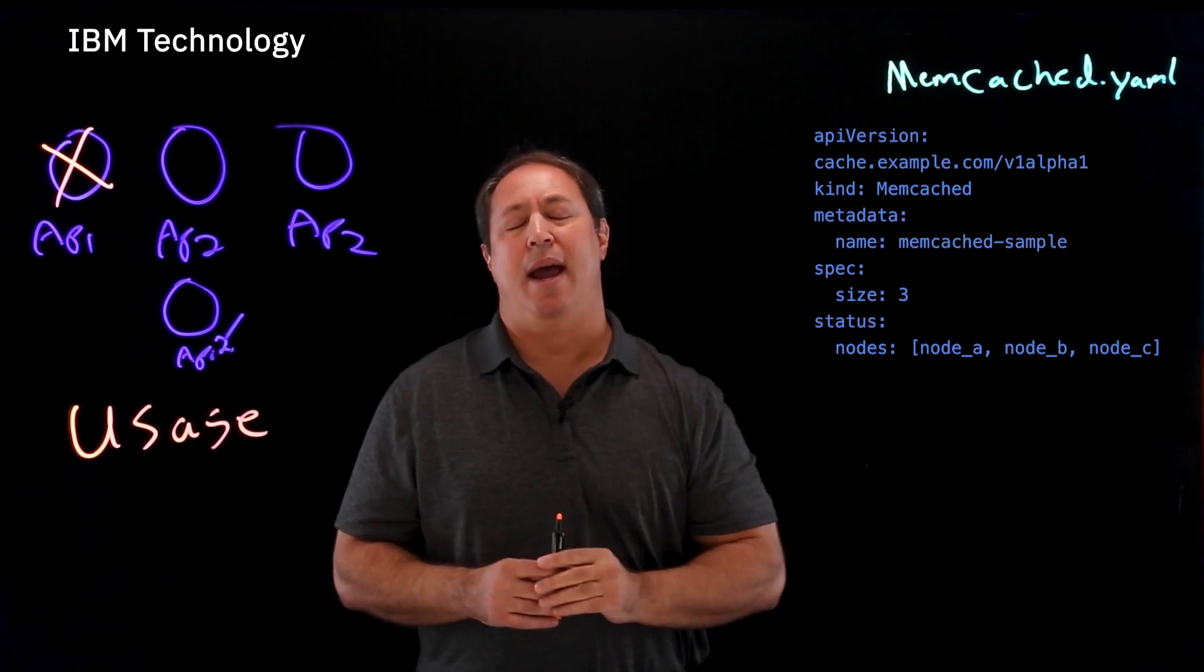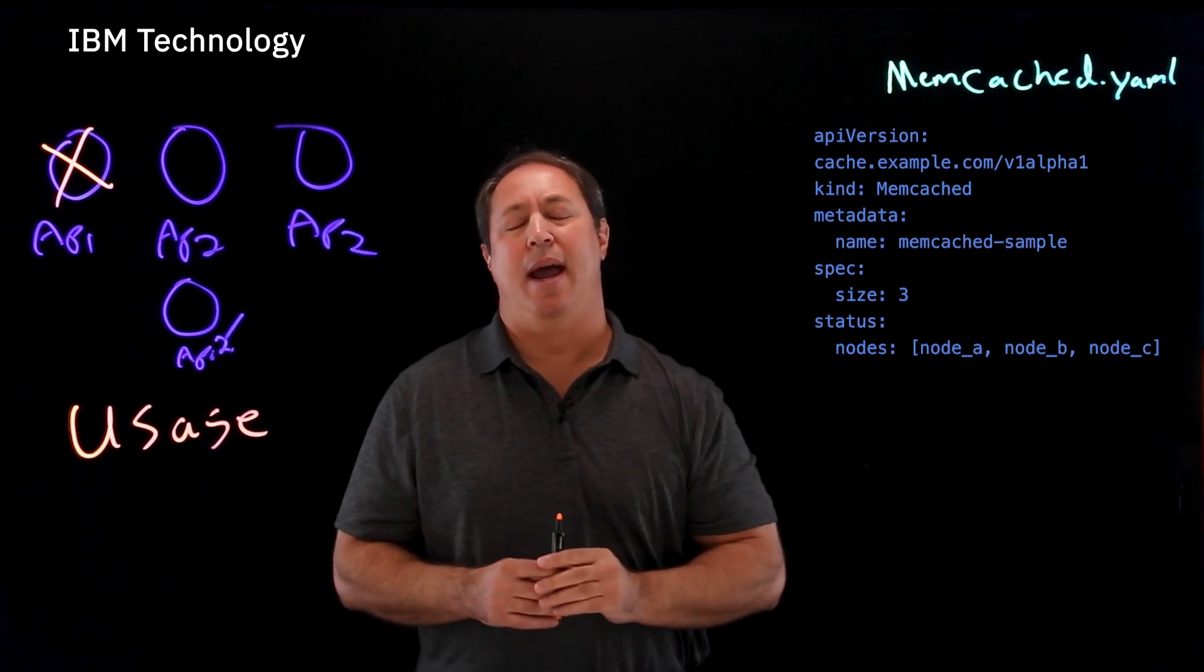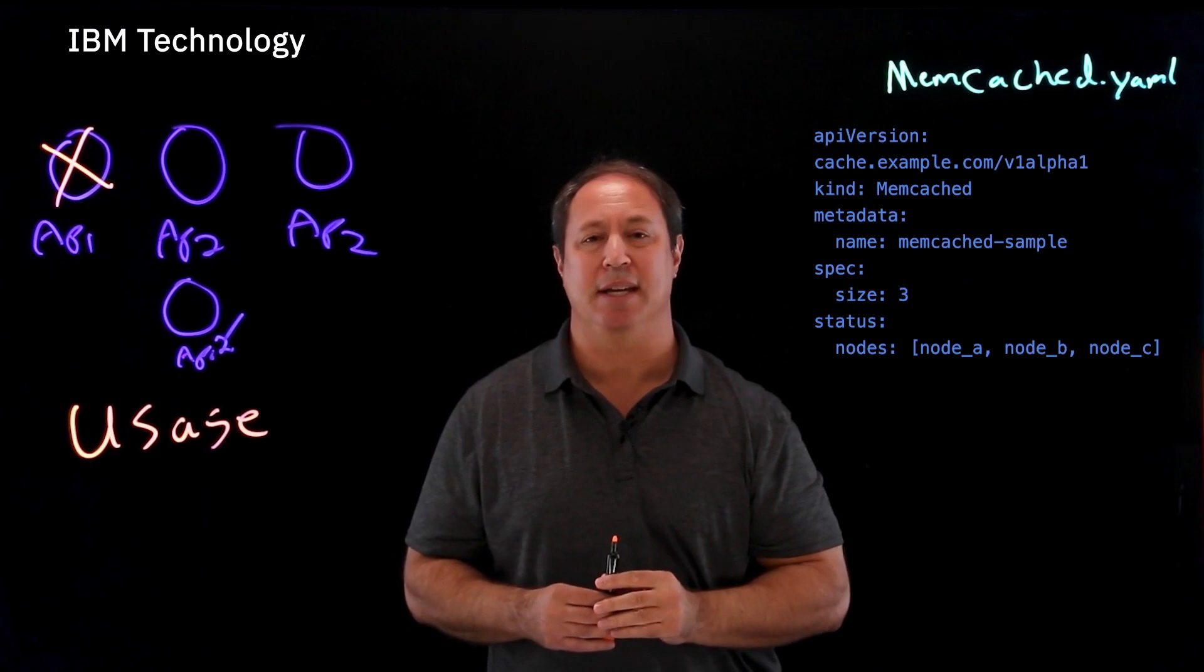So you're going to build a YAML, and you can see I've got a YAML here. And this is now a YAML for the custom resource. The example we're using is memcached. But the beauty of this is we're going to use the same kubectl commands.